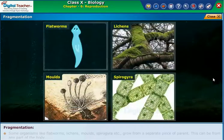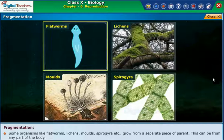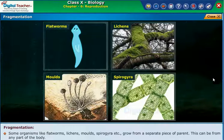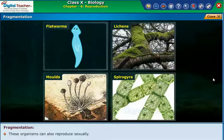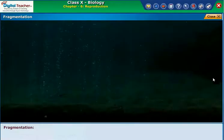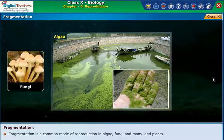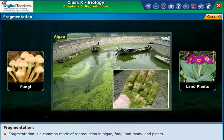Fragmentation. Some organisms like flatworms, lichens, moles, Spirogyra, etc., grow from a separate piece of the parent. This can be from any part of the body. These organisms can also reproduce sexually. Fragmentation is a common mode of reproduction in algae, fungi, and many land plants.